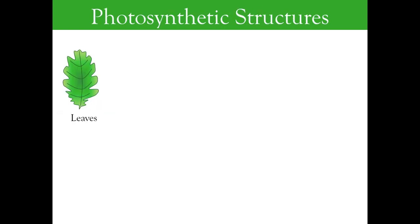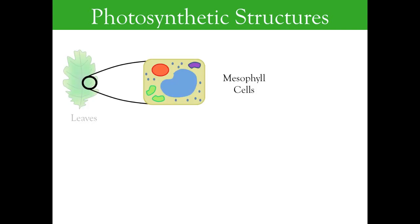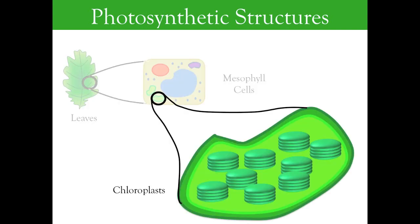Chlorophyll is found in photosynthetic tissues. For a tree, the leaves are this tissue. Within the leaf, chlorophyll is specifically found in cells from the mesophyll layer, in organelles called chloroplasts.